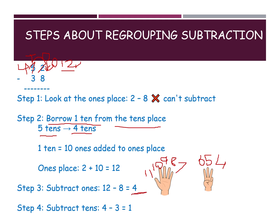Now in the tens place, the numbers are 4 and 3. Keep the big number 4 in your mind, open 3 fingers, and count backward: 3, 2, 1. So 4 minus 3 equals 1. The final answer is 1 and 4 — 14.